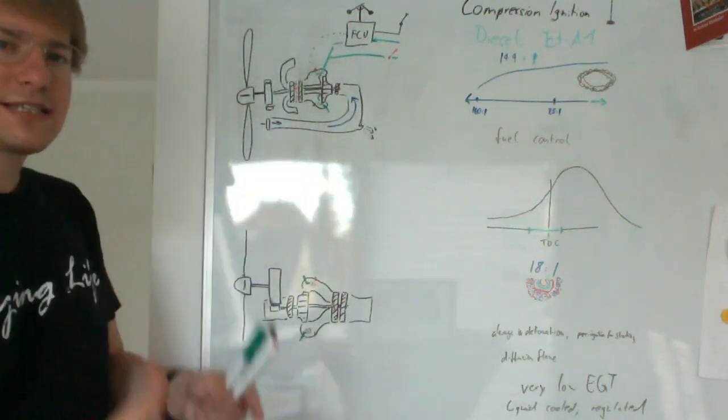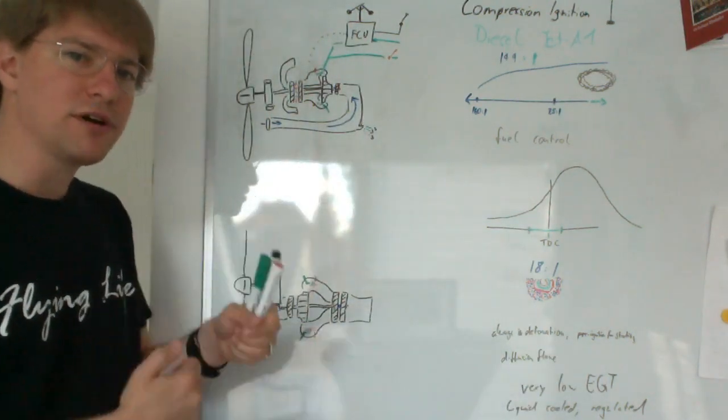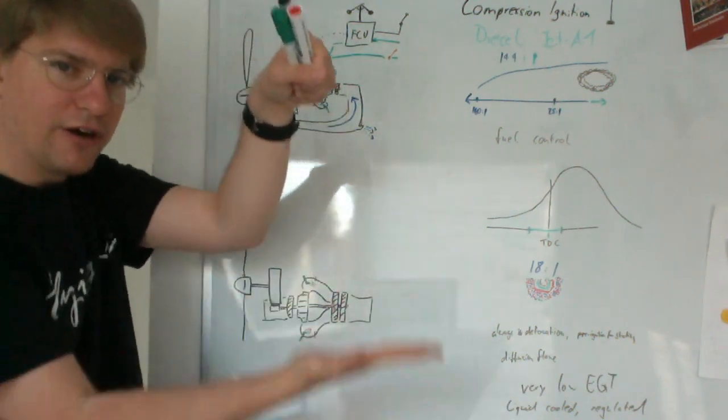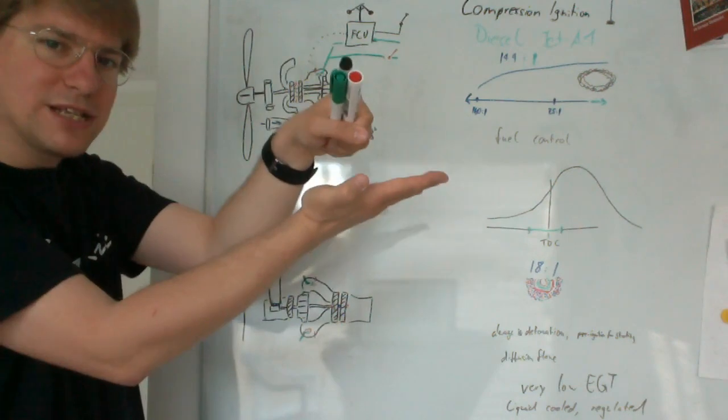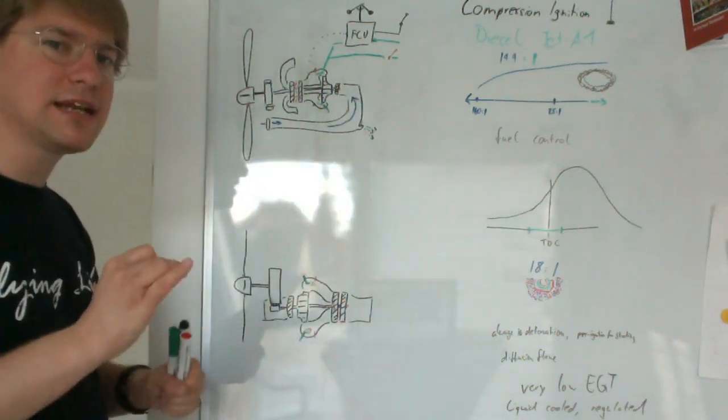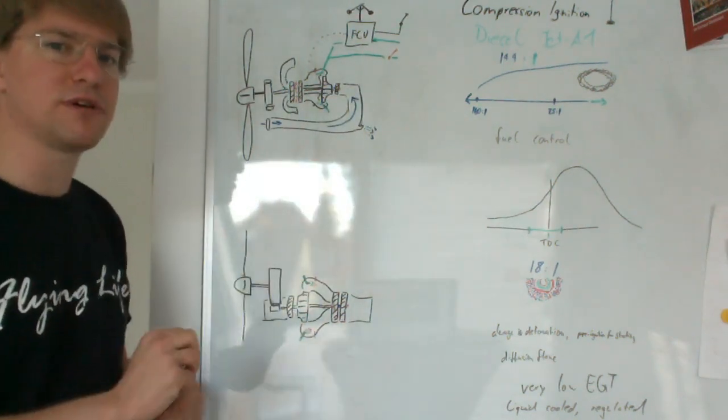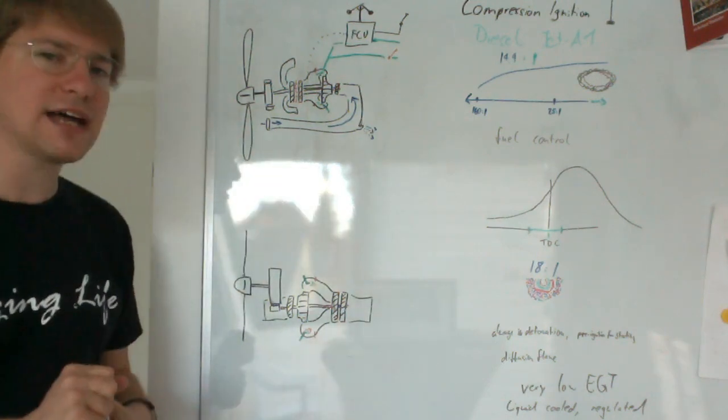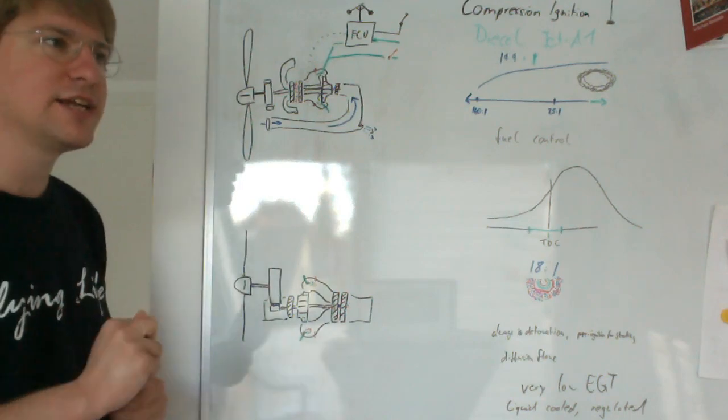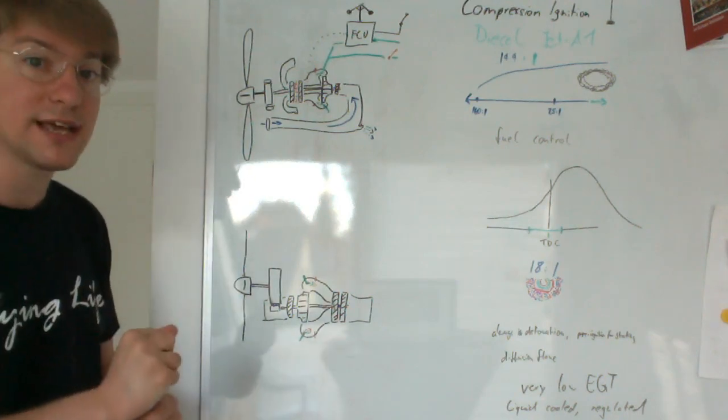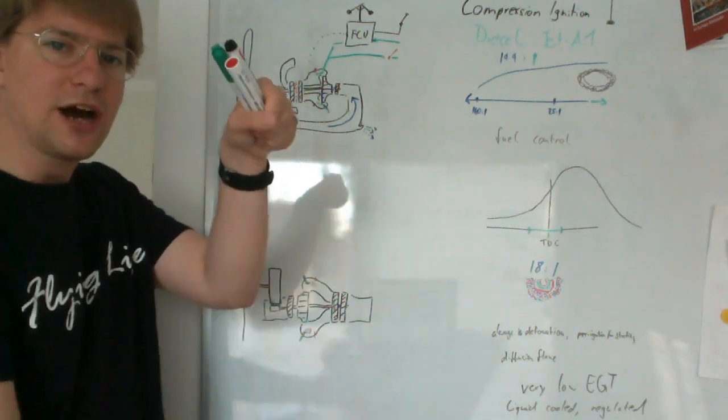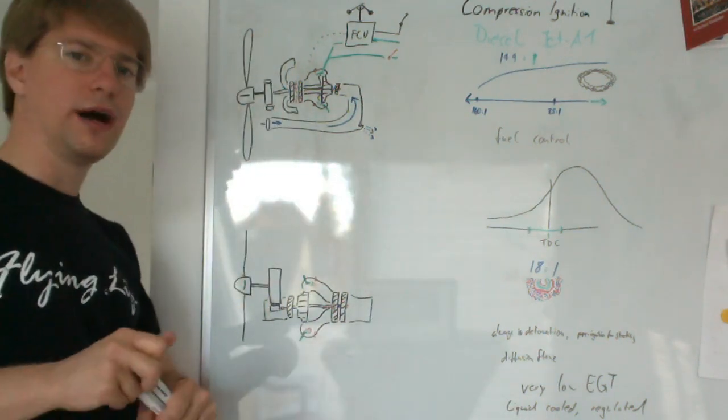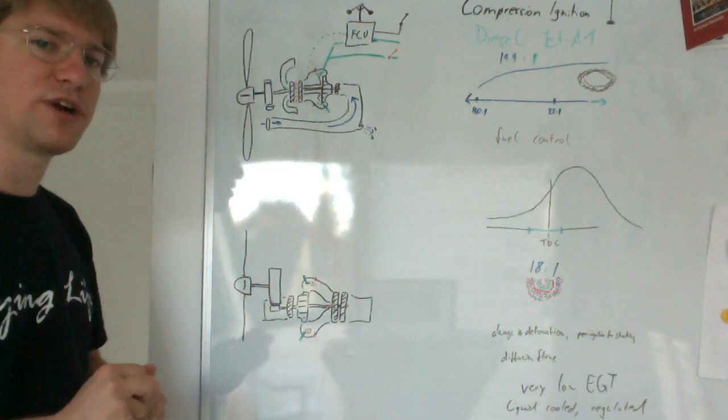This is what gets the engine going, what gets the process bootstrapped. Once the engine is running with enough RPM, the compression of just the piston compressing the air heats it up enough to keep the process going without the glow plug still glowing. So that's what we use to start the diesel engine, to bootstrap the process until the RPM is sufficient for the compression to be good enough to allow compression ignition to work.